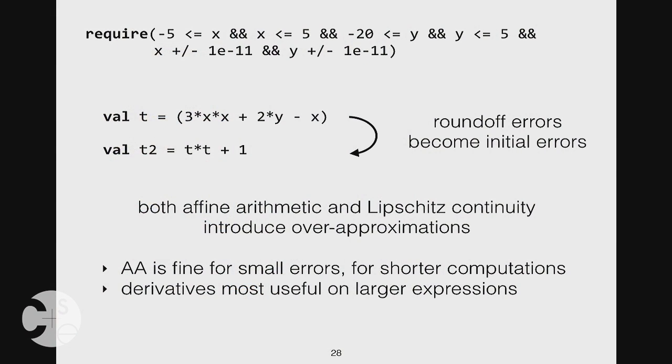Q: So T2 is the error from the derivative of T? A: No, T and T2 are just program variables — this is just a program. We only want to use affine arithmetic for short portions of the program, splitting at let statements that the user defines. We could do this fully automatically, but we don't for now since users tend to write programs this way anyway.